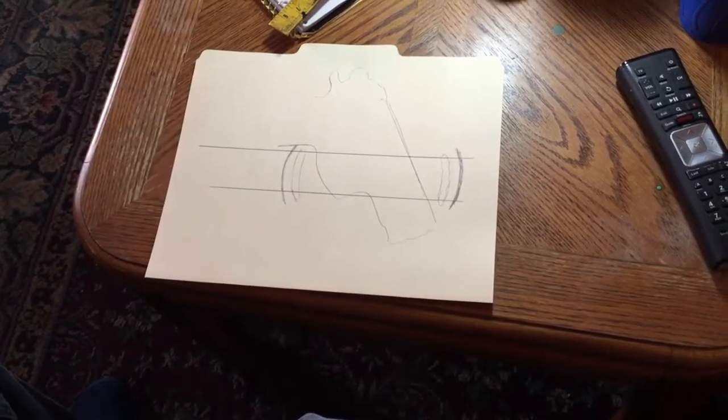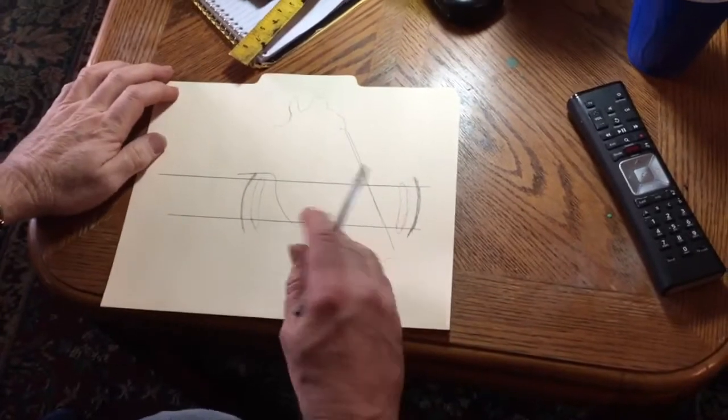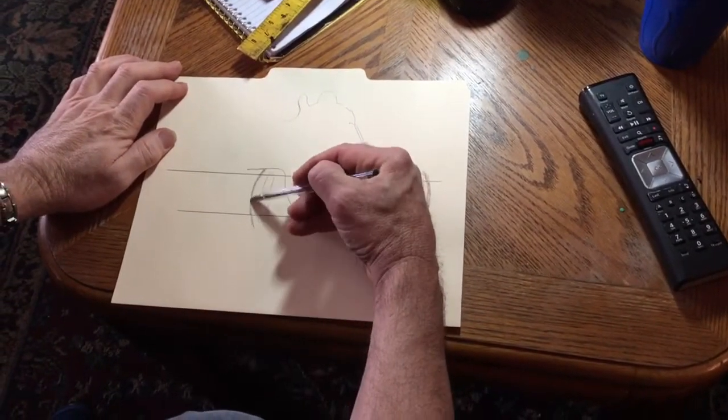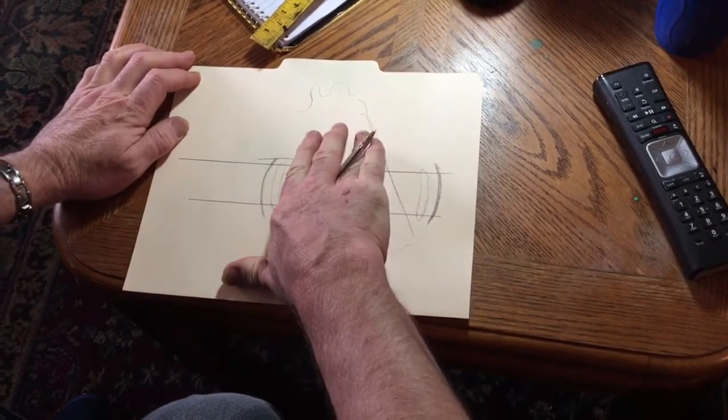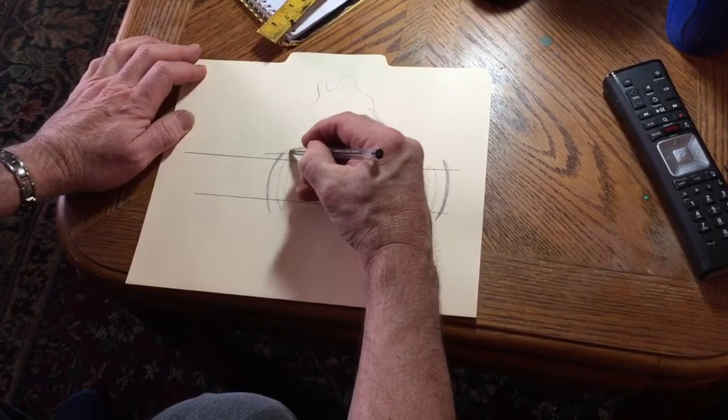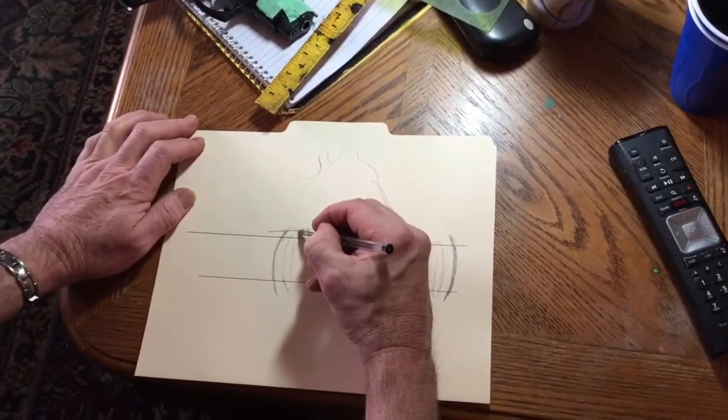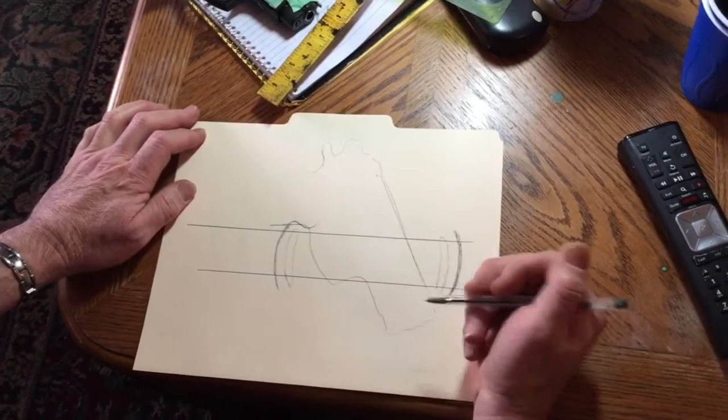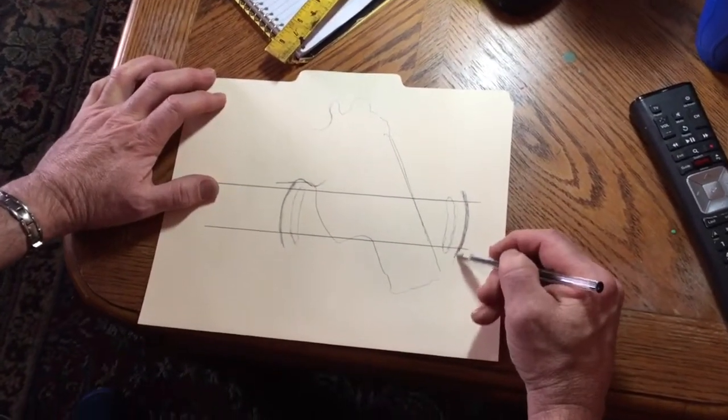Now, keep in mind with a cross draw holster, this is going to sound weird. This side, when this is on the belt, is going to be pulled in. So, even if this looks like it's going to be really close, it really won't be. You'll have to see what I mean.